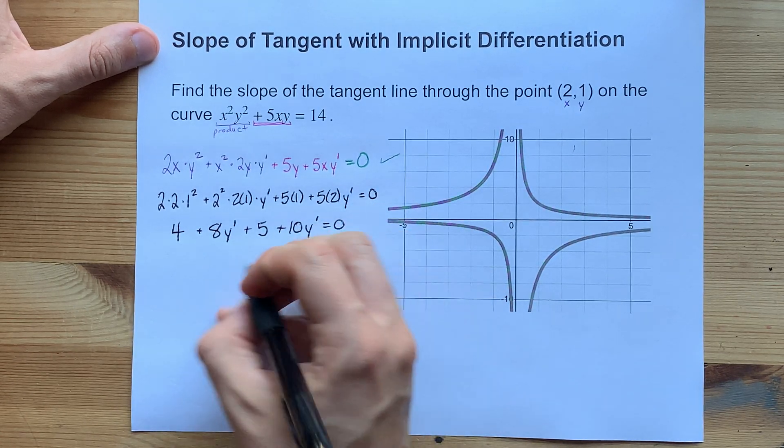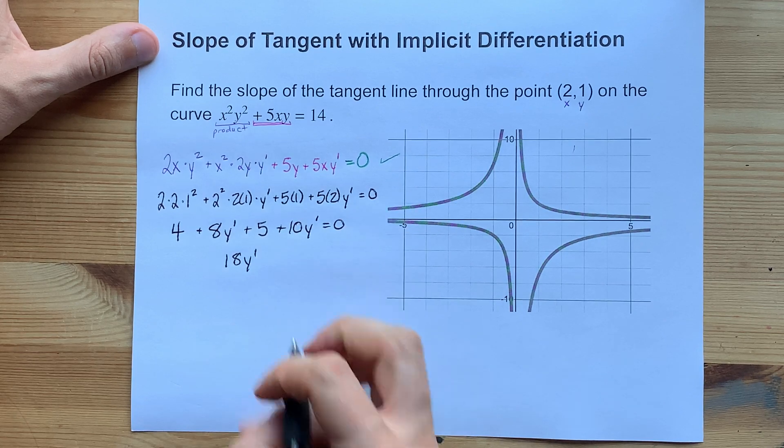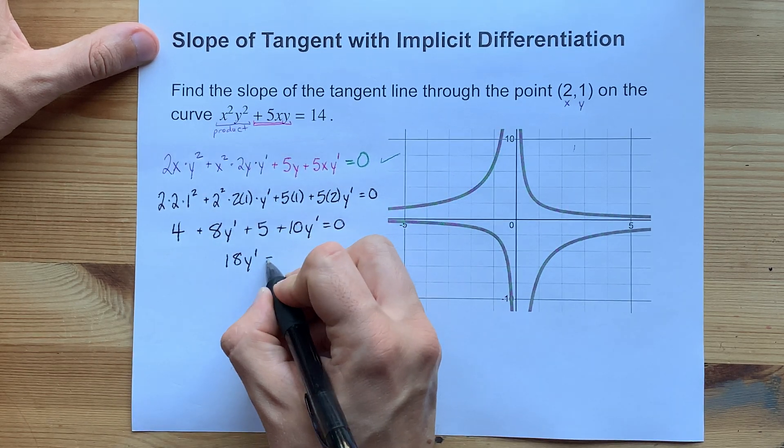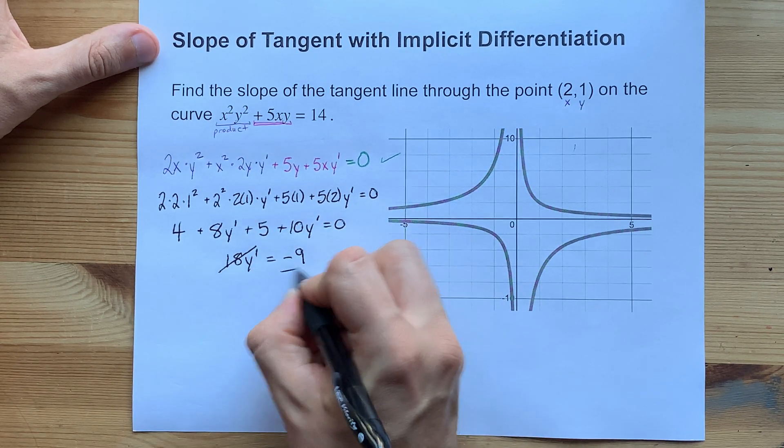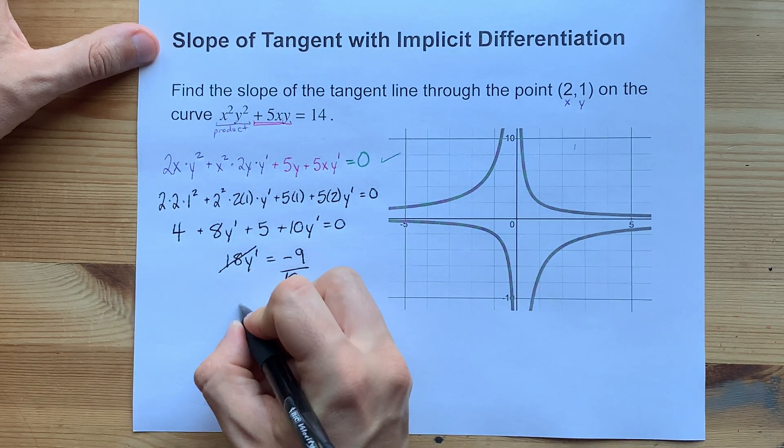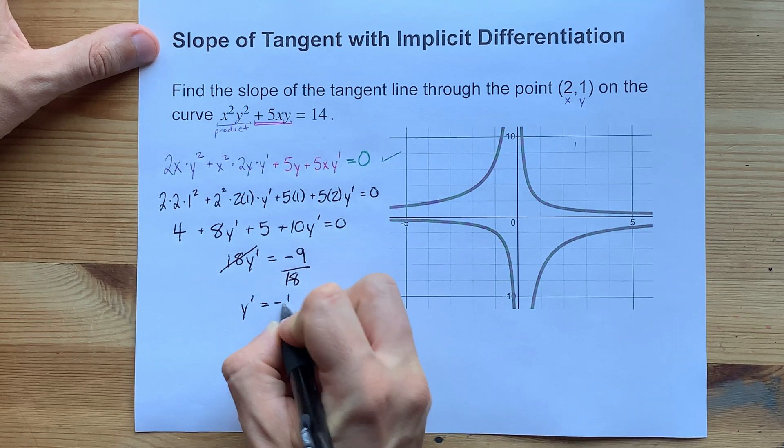Now I've got 18 y primes on the left here. 4 and 5 make 9. I'm going to move that to the other side, and then I can divide both sides by 18. y prime apparently is negative 1/2.